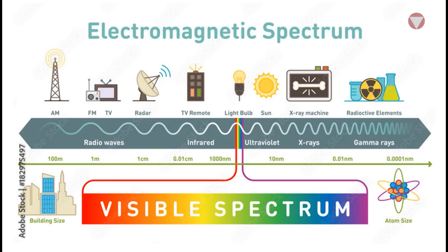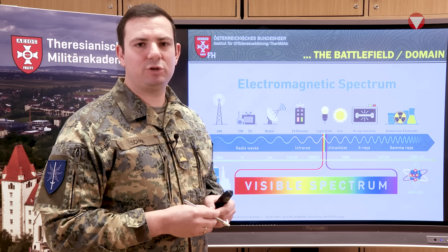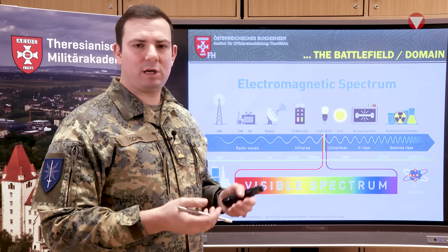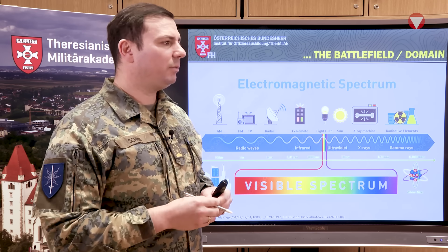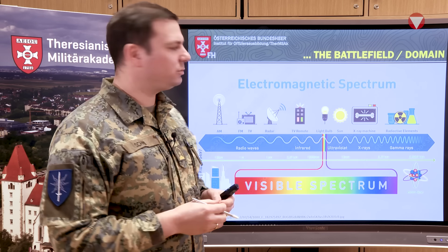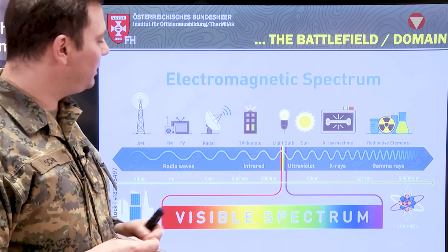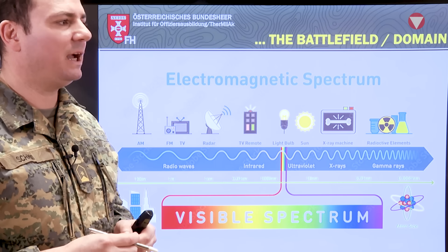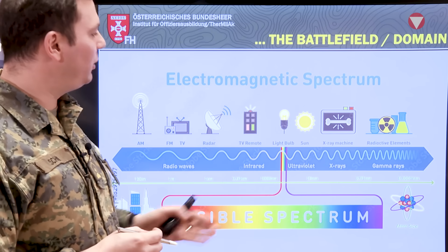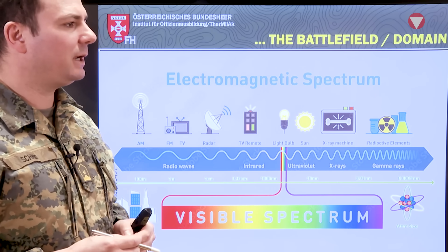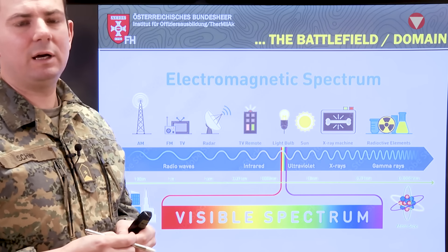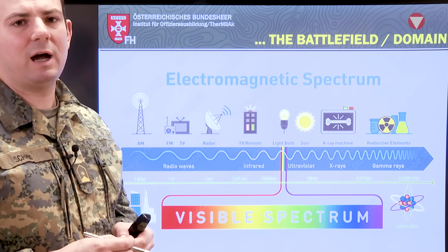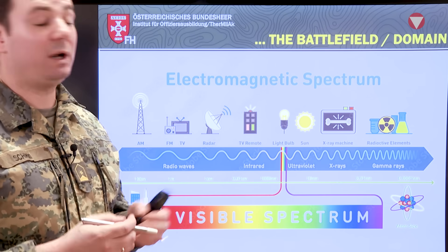Now that we've covered the basics, let's look at the electromagnetic spectrum in general. On the left side you would see electromagnetic radiation and fields — what we call non-ionizing radiation. In the middle area is the visible spectrum: visible light, infrared, or UV. On the right side you have sun rays, gamma rays, x-rays — up to what we call ionizing or radioactive radiation.